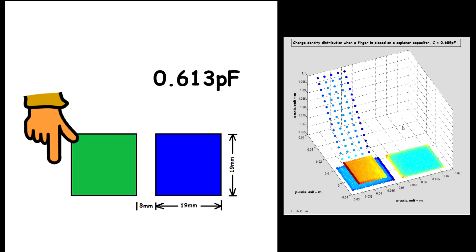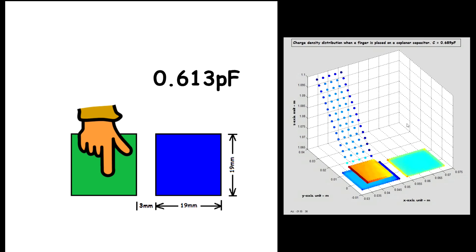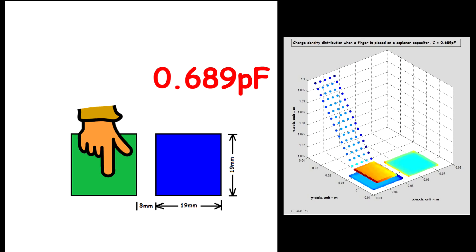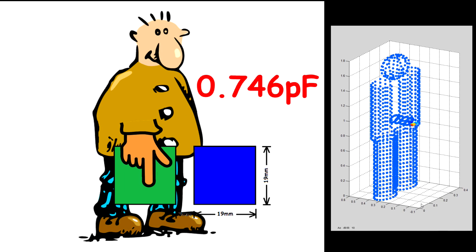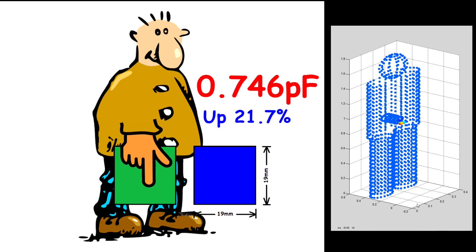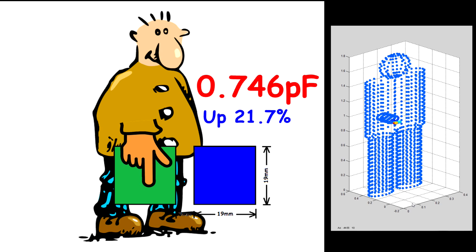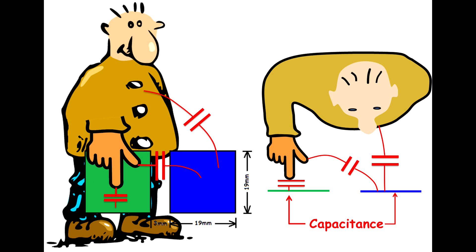In a simulation of a finger 2 mm above a coplanar structure, the capacitance increased by 12%. When the human body is included in the calculation, the capacitance increased by 22%. The human body itself double the influence on the capacitance.